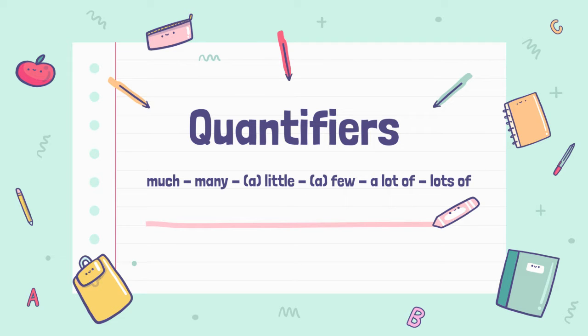Quantifiers say something about the number — not the exact number, but the quantity. So: much, many, little, few, a lot of, lots of, a little, and a few.